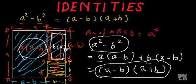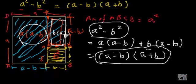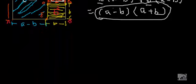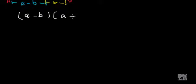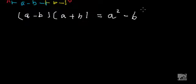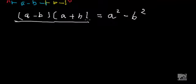I'll tell you one more method of proving this identity. This time we'll start from the right-hand side. Let me write this identity once again in the opposite way: A minus b multiplied by A plus b is equal to A² - b². In the left-hand side we have (A - b)(A + b) — it means it is a rectangle of sides A - b and A + b.